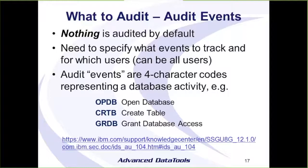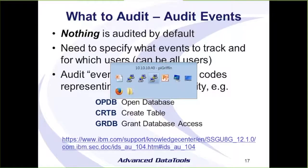I've got some examples here: OPDB for open database, CRTB for create table, and GRDB for grant database access. You can see that CR is usually used for create something, and DR is for drop. There's a long list of these events — I've supplied a link — and I can bring that up to show all the event codes.